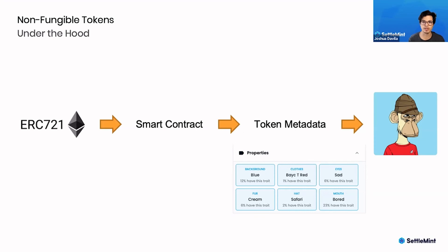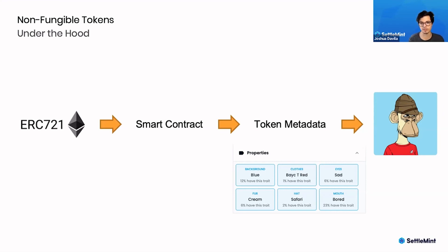In that token metadata, you have a link to a separate file which has all of the different properties of the NFT you're referring to. Inside that metadata, let's say we have a link to an image — in this case it's a Bored Ape. Also inside that metadata you'll have the properties describing what exactly you're looking at in that image — for example, the background is blue, he's wearing a red shirt, and his eyes are sad.